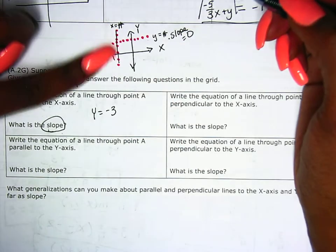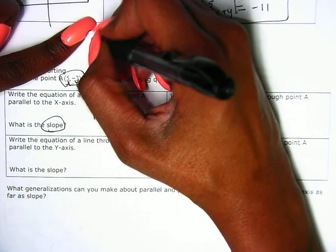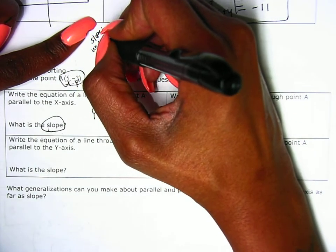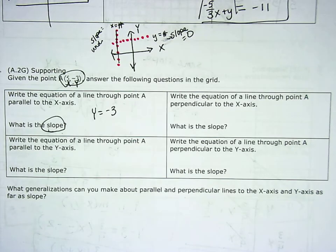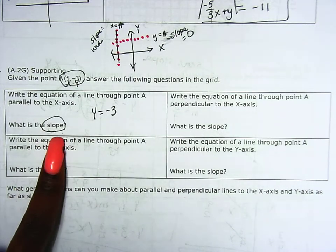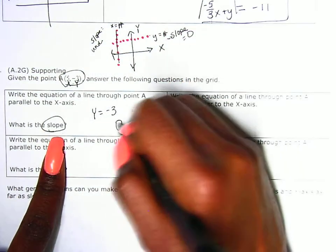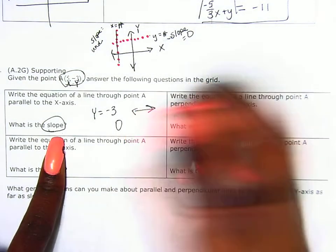And if it's perpendicular — going up and down — it's x equals a number, and these have a slope that we call undefined. So now let's properly answer the question: what is the slope of this line? The slope is 0, because that is a horizontal line.